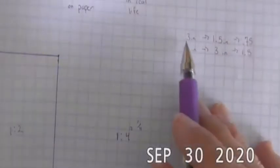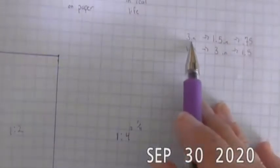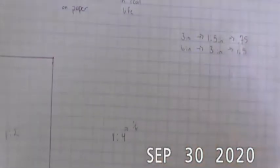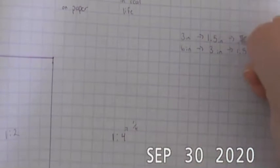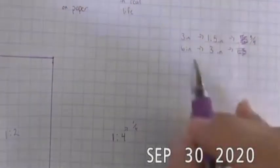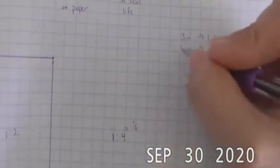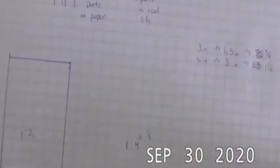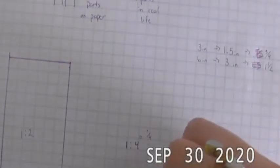One fourth of my three inch measurement, my original true size, is going to be 0.75 inches, which is three fourths. And one fourth of my true size six inches is one and one half. So I can go ahead, measure and draw that out.